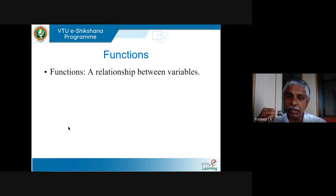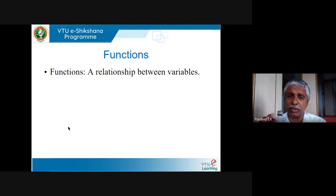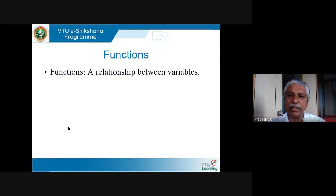If the relationship is expressible nicely — for example, on January 1st it's 1 rupee per kg, January 2nd it's 2 rupees, January 3rd it's 3 rupees — that is a very nice function. In real life such nice relationships don't always exist, but this illustrates the concept. A function means a relationship between variables — one variable was the date, another was the rate of tomatoes.